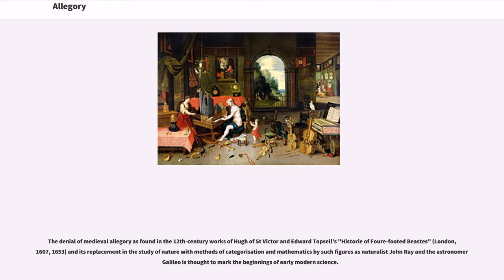The decline of medieval allegory is found in the 12th-century works of Hugh of St. Victor and Edward Topsell's History of Four-Footed Beasts, and its replacement in the study of nature with methods of categorization and mathematics by such figures as naturalist Gesner and the astronomer Galileo, which is thought to mark the beginnings of early modern science.